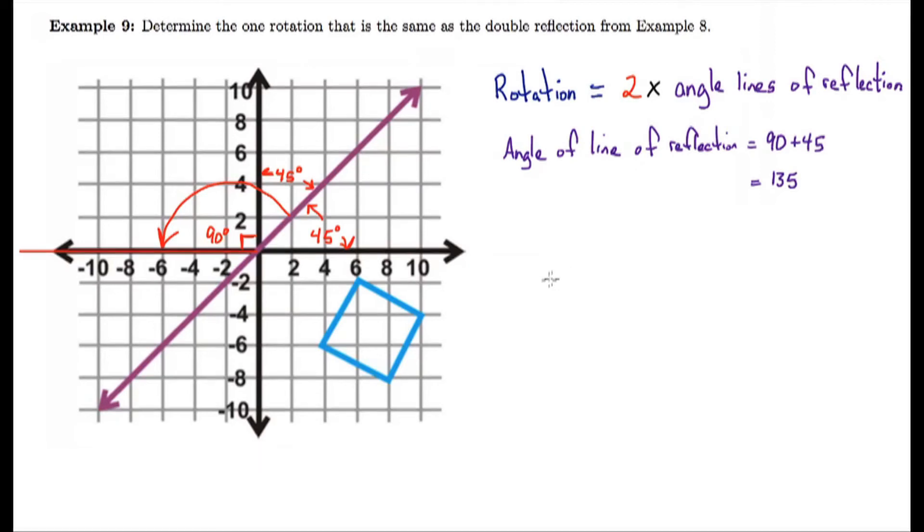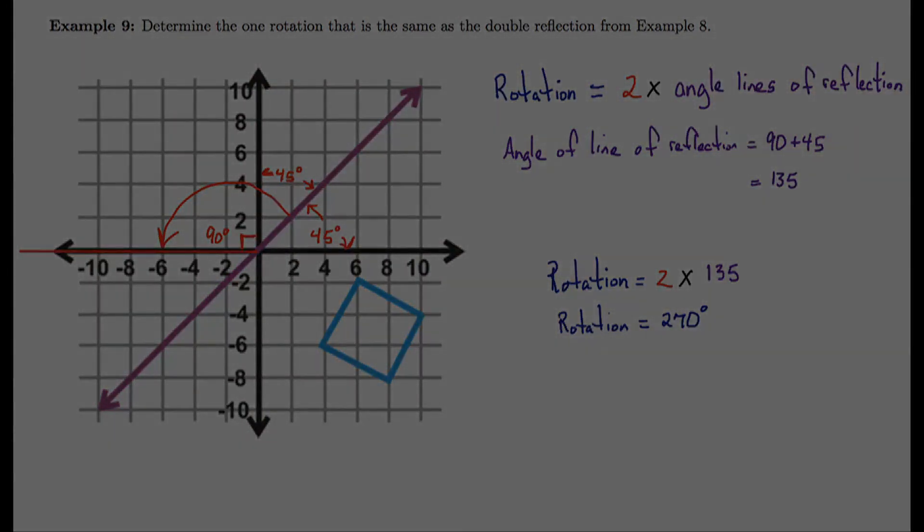So what do we do with the 135? Well, we double it. The rotation of the figure is going to be two times the angle that the lines of reflection make. So two times 135 is 270, which is exactly three quarters of a turn. Try the practice set.